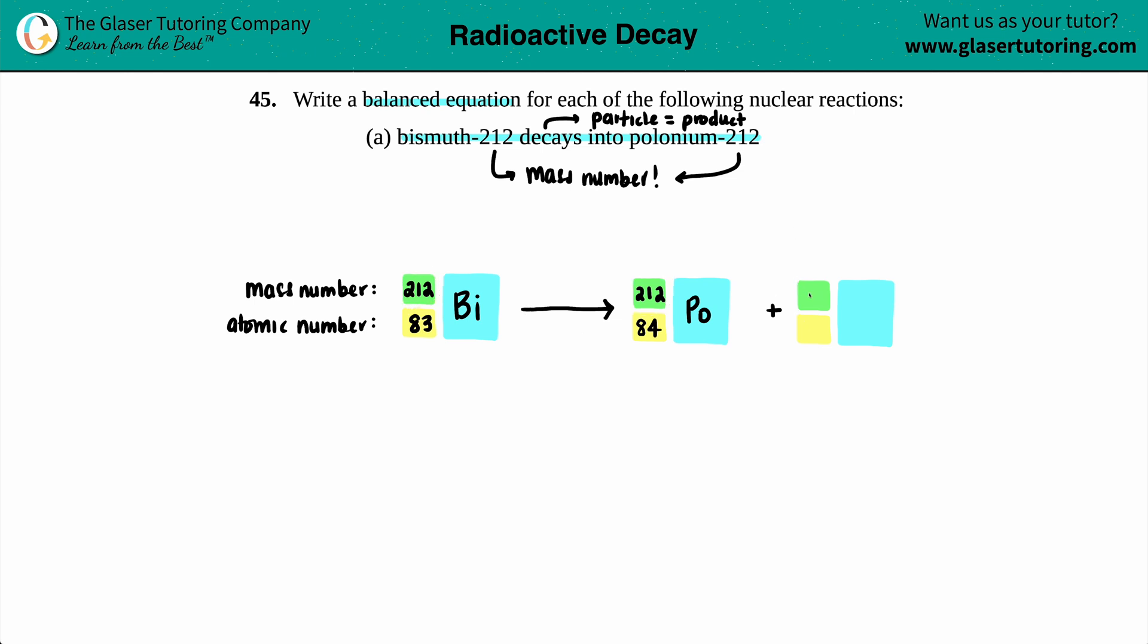212 equals 212 plus zero, this one's got to be a zero. And then if I just solve for x, right? 83 equals 84 plus what number? If we just do this: 83 equals 84, subtract 84 from both sides if you need to, and you get a negative 1. But once you get more familiar with these, you'll be able to pull those numbers out very quickly.